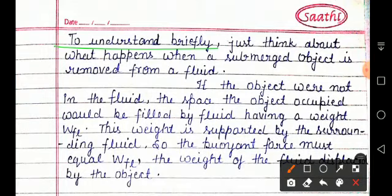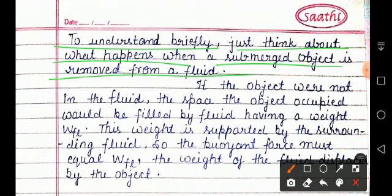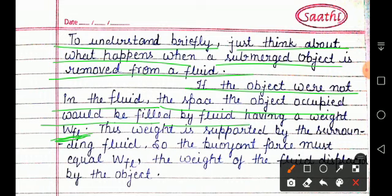To understand more deeply: just think about what happens when a submerged object is removed from a fluid. If the object were not in the fluid, the space the object occupied would be filled by fluid having a weight W-fl. Agar object paani ke andar nahi hai, toh jab hum iske andar object daalte hain, toh woh us paani ka space le leta hai aur us paani ka jo weight hai woh W-fl hai.